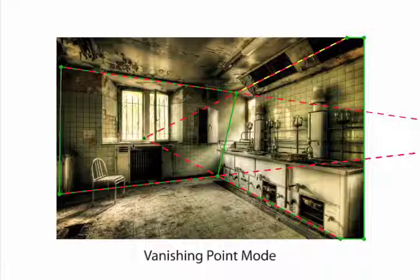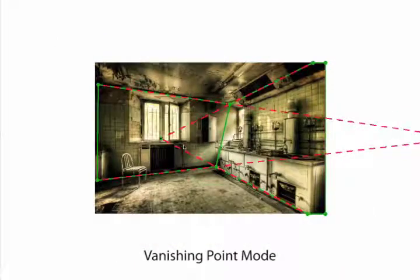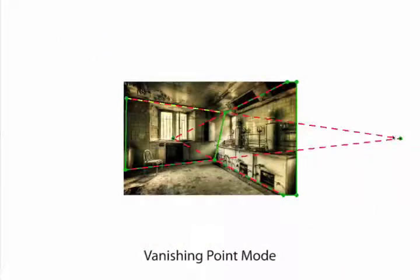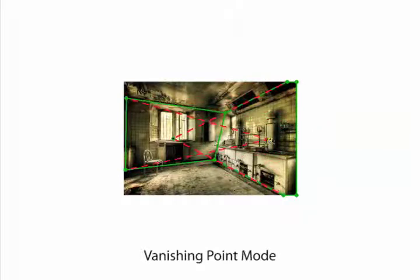One of the vanishing points is outside the window, so we can just zoom out and grab it, and we can move it closer to the center of the image, like you'd get with a wide-angle photo. We move the other vanishing point inward as well.